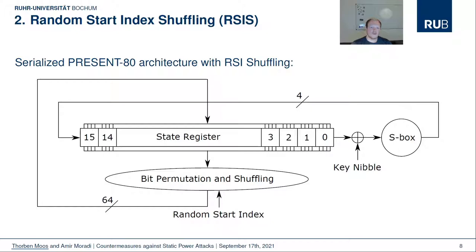The second countermeasure is the most simple form of shuffling: random start index shuffling. In each round, a 4-bit random number decides which state and key nibble are passed through the S-box circuit first. As a result, state nibble 5, for example, is processed at different points in time in each recorded measurement. While the exact timing is not as important for static power adversaries as for dynamic power adversaries, it still leads to the situation that state nibble 5 is present in a different circuit part each measurement, creating noise and reducing measurement quality.